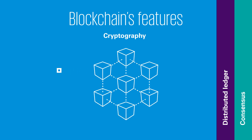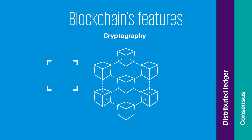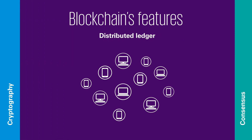A blockchain is a chain of blocks which contain transaction information. Each block of data contains a unique hash key, which is like a fingerprint used to identify a block and its contents, that links the blocks together. A block will also contain the hash of the previous block, making the chain immutable, as any change will require a new hash that will break the chain.